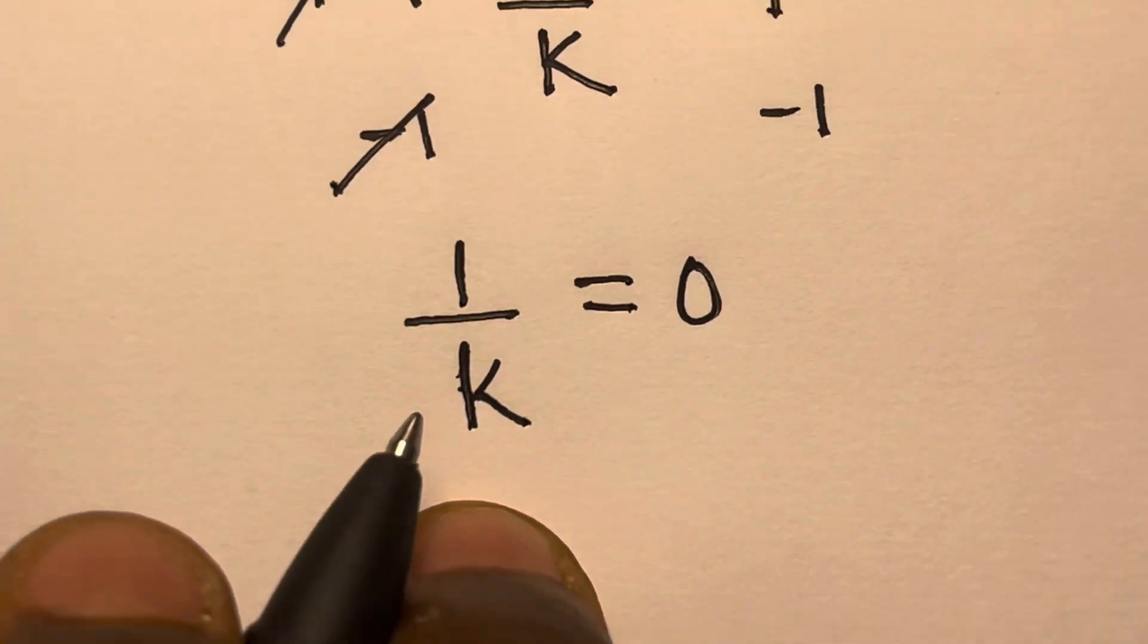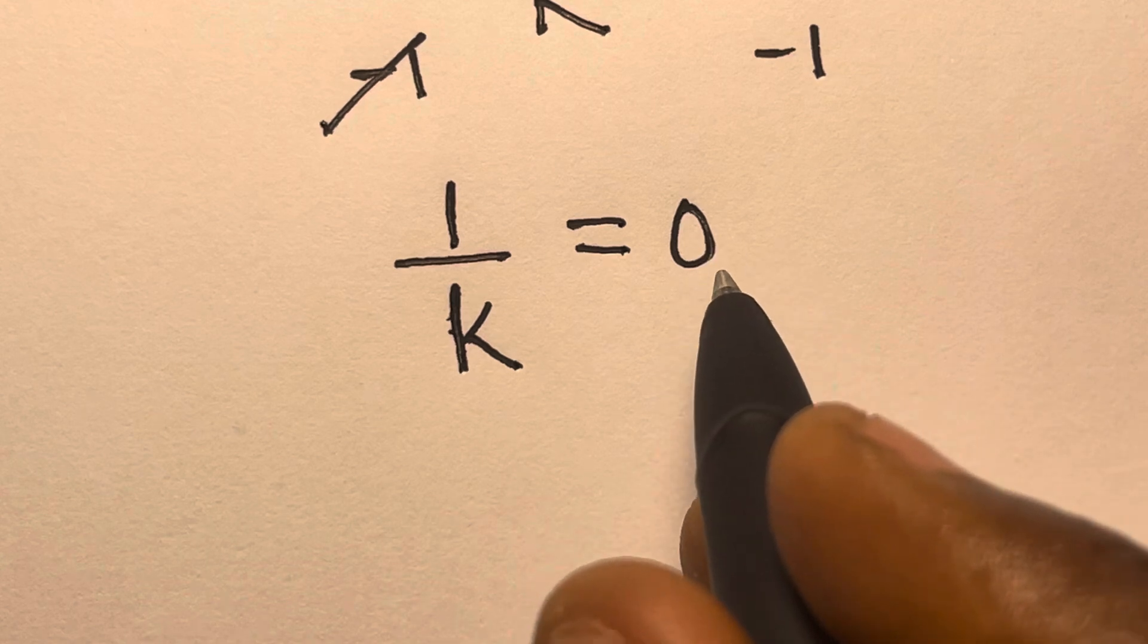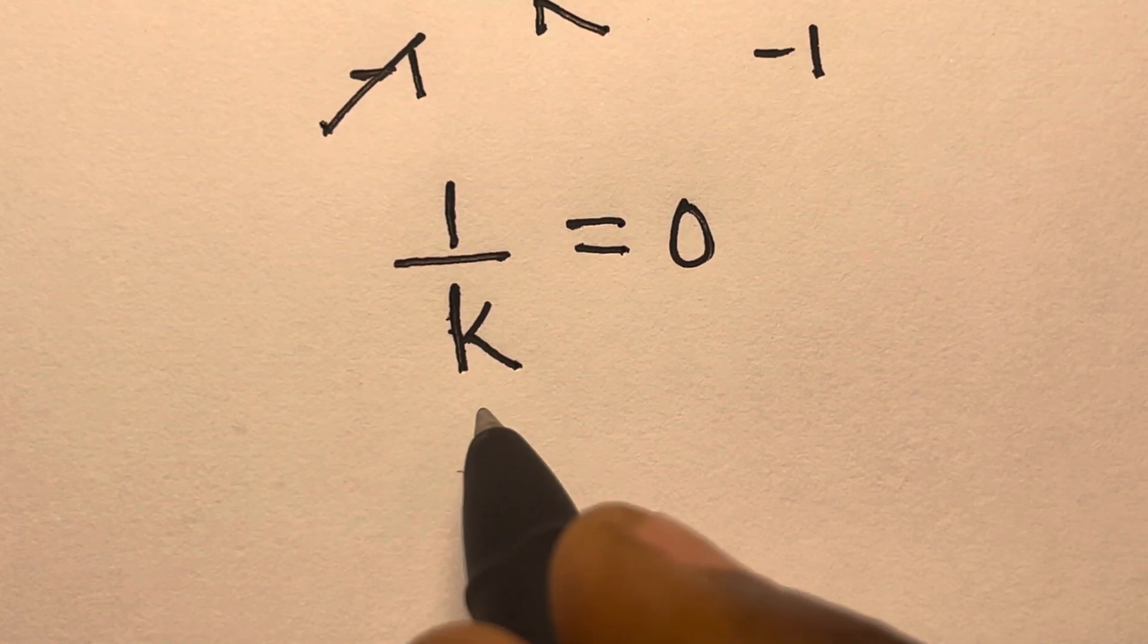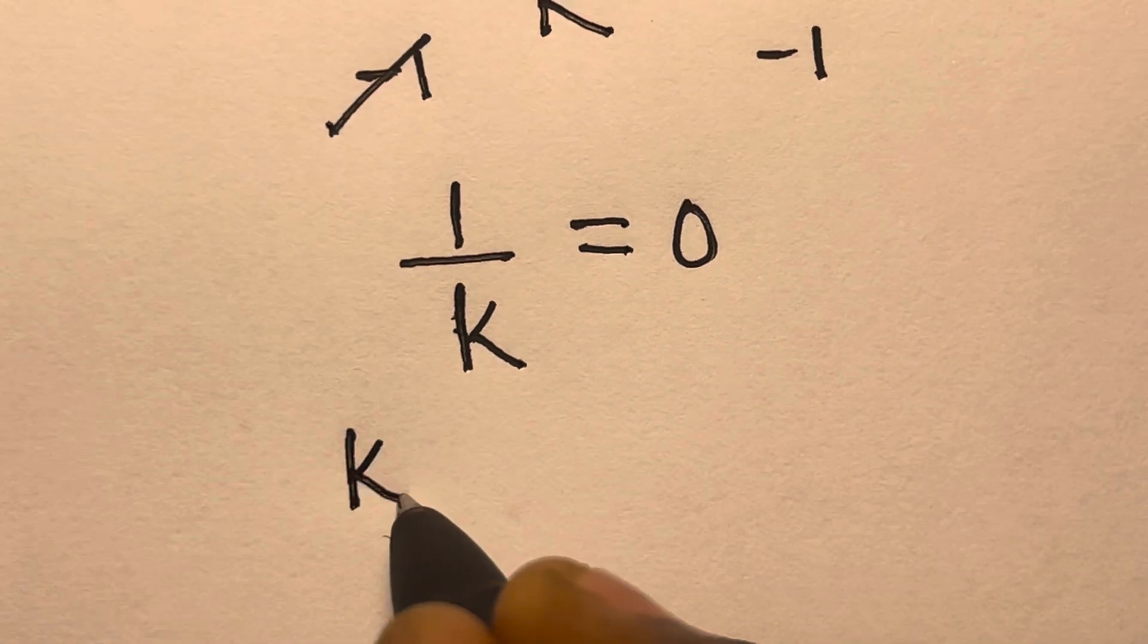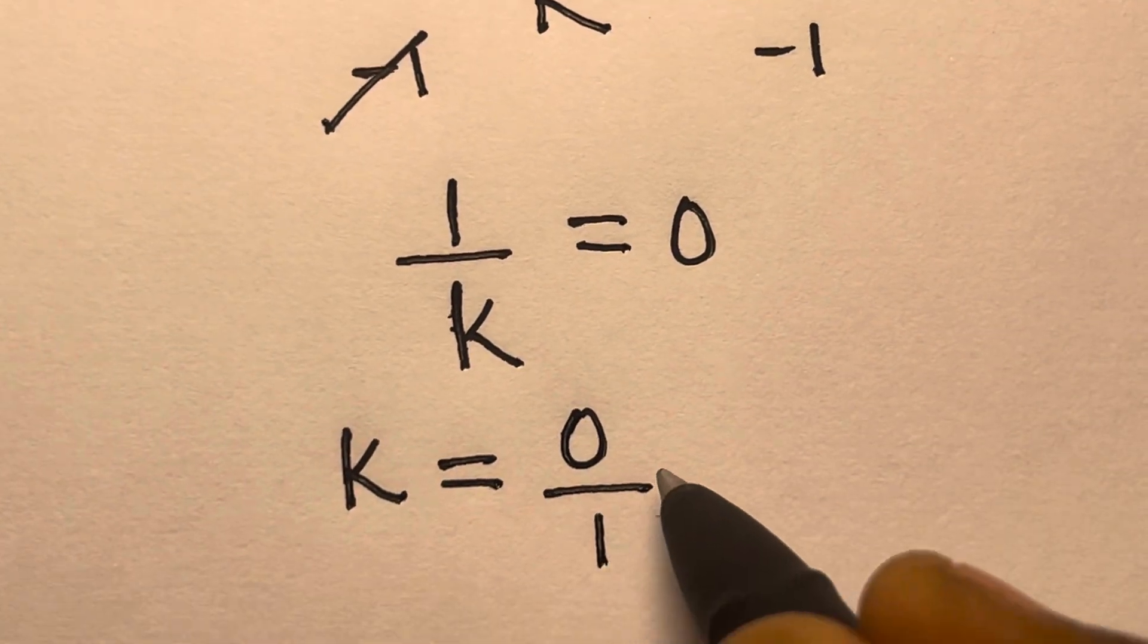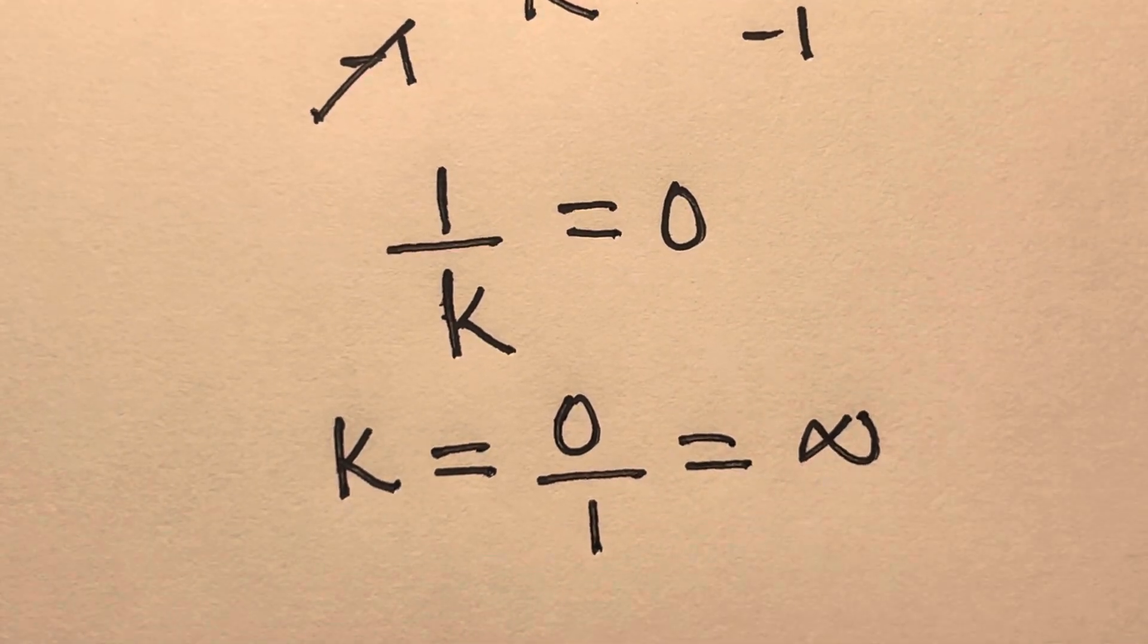Right? So here now we can have, if you cross multiply, you have k multiply by 0 equals 1. We are going to have k equals 0 divided by 1, and that is equal to infinity.